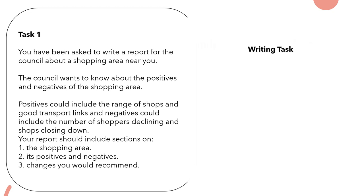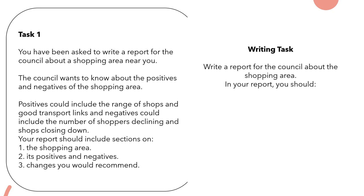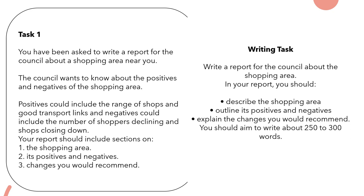Now the actual writing task: write a report for the council about the shopping area. In your report you should describe the shopping area, outline its positives and negatives, and explain the changes you would recommend. You should aim to write about 250 to 300 words. This is more like a level two kind of question — you can tell because the word count is a little bit higher than we'd normally get for level one. You'd also get 21 marks for this question. This is a real assessment that has been used by the exam board, so it's a really good one to practice.